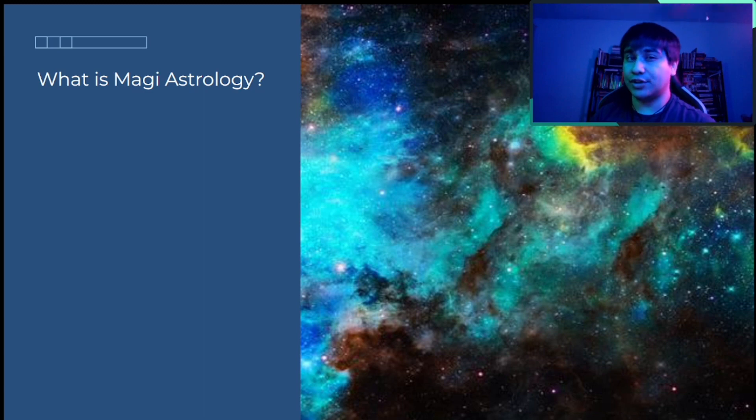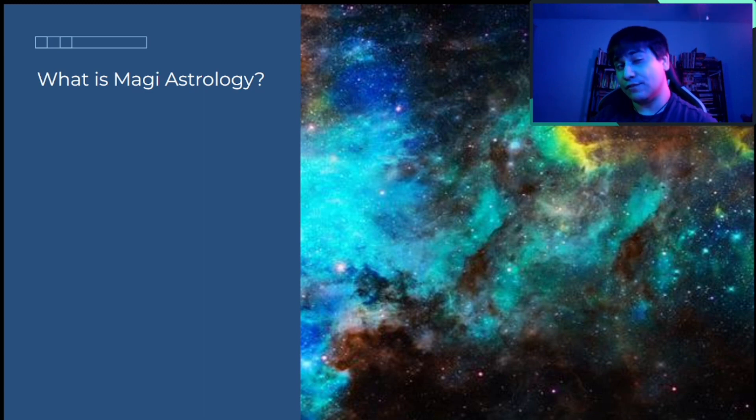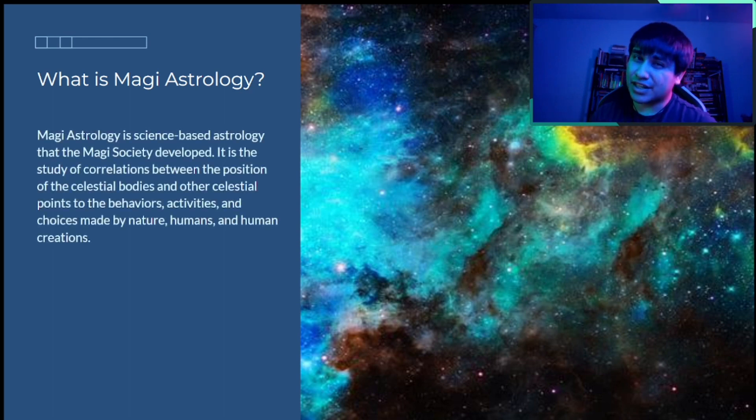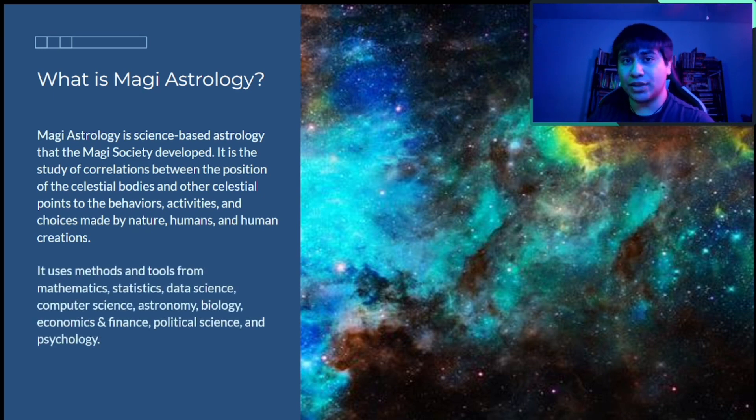Before we get into the actual video itself, we're going to be talking about what I focus on. So what I focus on is Magi Astrology, which is a variation of an actual scientific-based astrology. There's quite a few of them. Magi Astrology, as I mentioned, is scientific-based, but is also made by the Magi Society, hence why it's called Magi Astrology. What it is, is mainly the correlation and study between the celestial bodies to the behaviors and activities by humans, natures, and even man-made things. And of course, how the research is done is through mathematics, data science, computer science, and many other science branches and techniques.